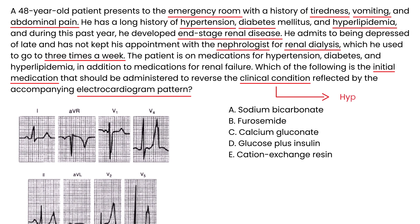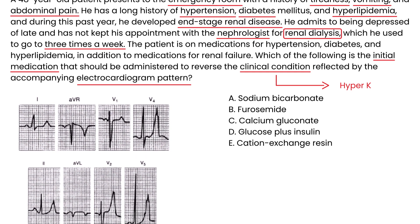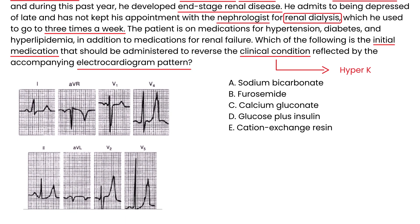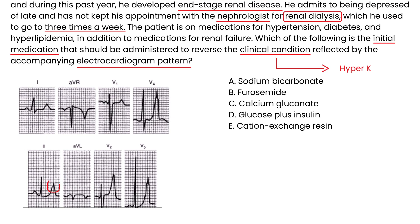Well, the clinical condition is hyperkalemia. How do I know that? He missed his dialysis appointment, so his kidneys are not excreting the potassium. And look at this EKG, you'll see some very tall T waves. Peaked T waves are definitely a sign of hyperkalemia. The very first thing you need to do is protect the myocardium, and that can be done with calcium gluconate, so that's choice C. The very next thing you would do is give insulin to drive the potassium back into the cells.